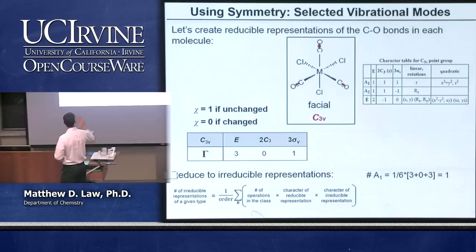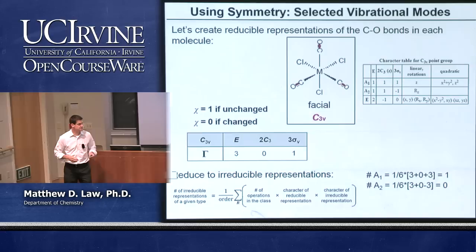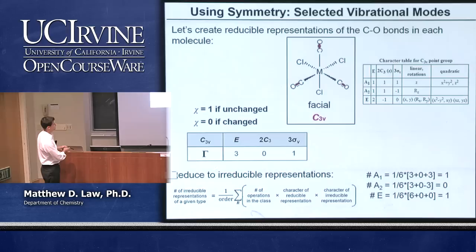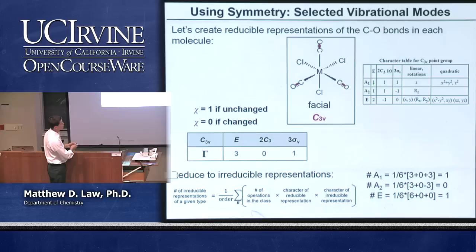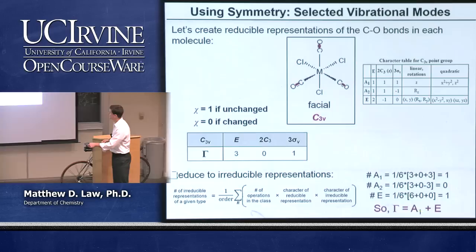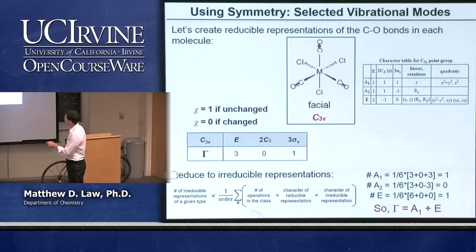So gamma equals 1 A1 and 1 E. We can look at A1 and E and assign whether we're going to have infrared or Raman activity from these different modes. For IR activity, we need the same symmetry as the XYZ axes. Looking at the character table, A1 has the symmetry of the Z axis, and E has the symmetry of the X and Y axes together. So both A1 and E are infrared active — we expect two peaks in the spectrum.